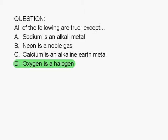To summarize, the statements in choices A, B, and C are true. Choice D is a false statement — oxygen is not a halogen.